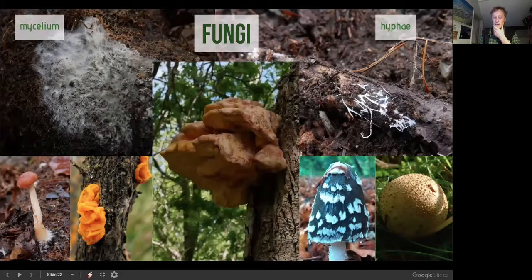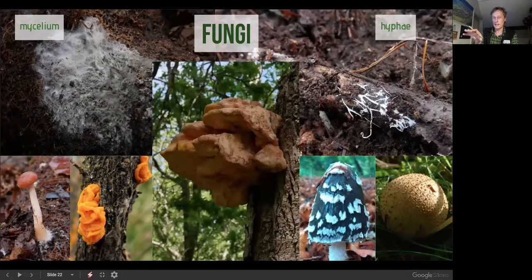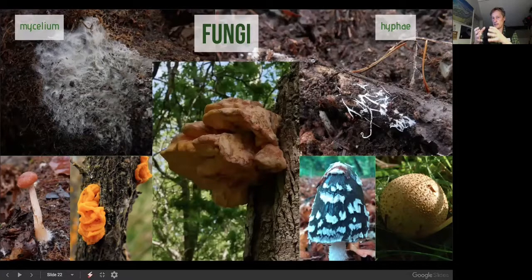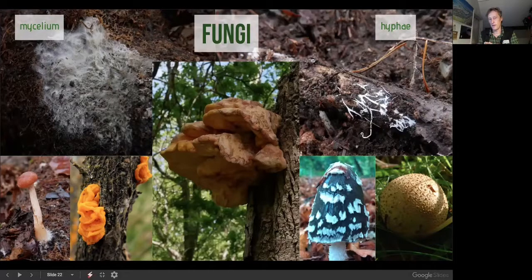Bracket fungus on a tree isn't necessarily a bad sign — it could even be a good sign. By the time we see the fruiting body, the mycelium inside may have been rotting dead wood for years. An old tree is heavy with dead wood, which can be a burden; by rotting the core, fungi create a hollow tree which is actually stronger. The fungi reduce the tree's mass, helping it survive longer, while also making nutrients available to the roots and creating habitat for birds and other wildlife.